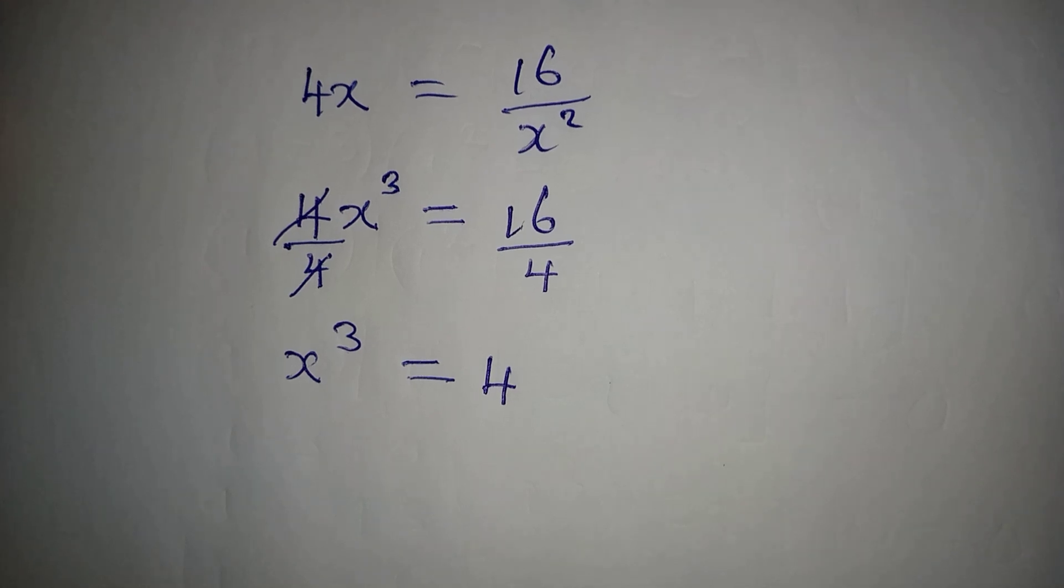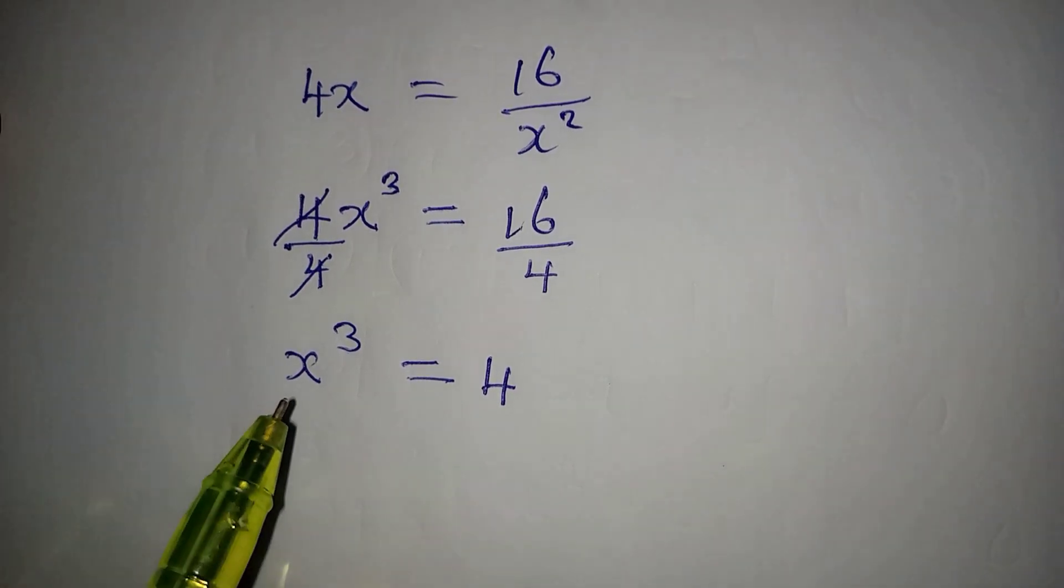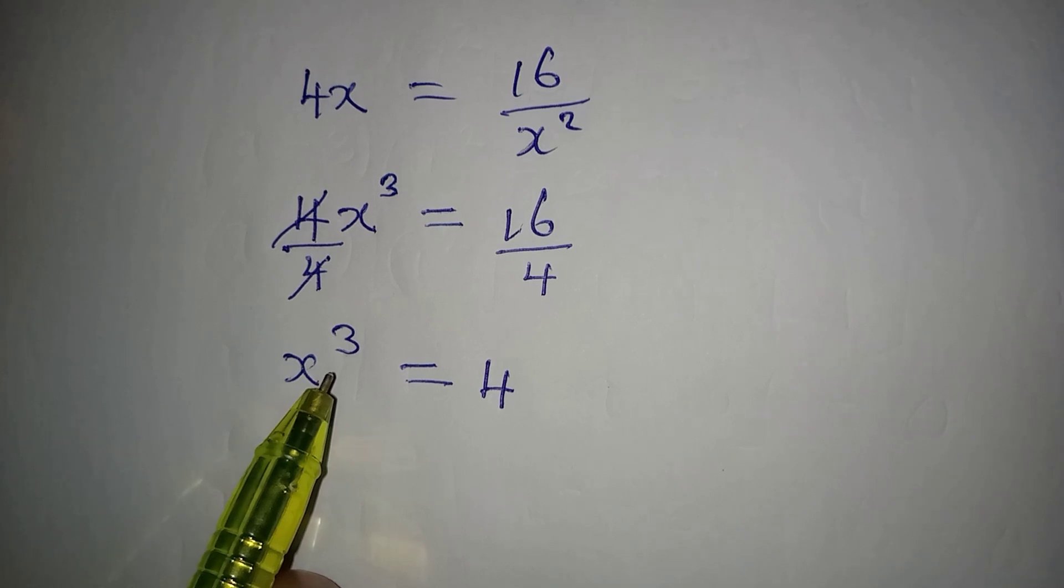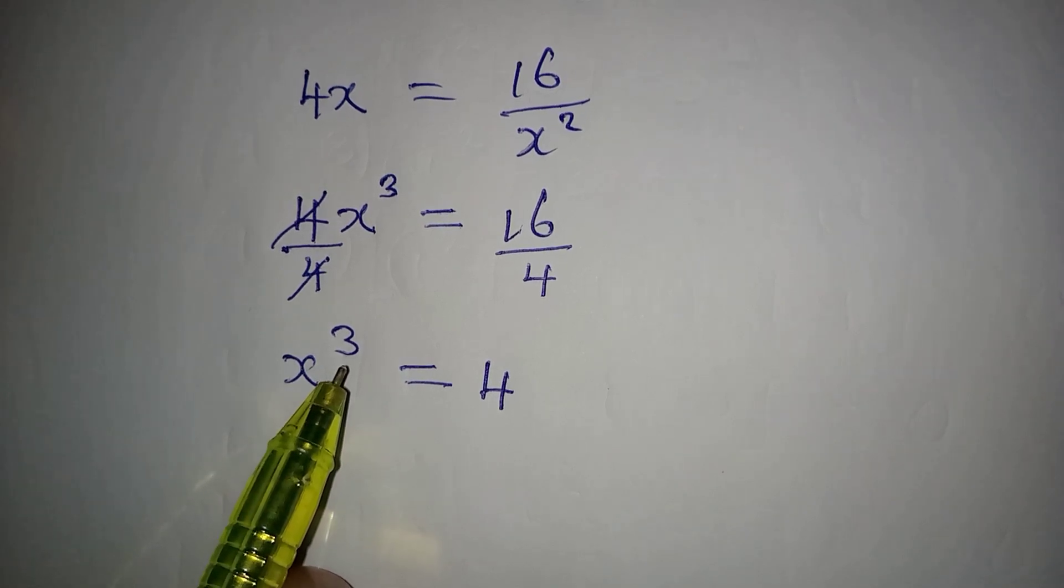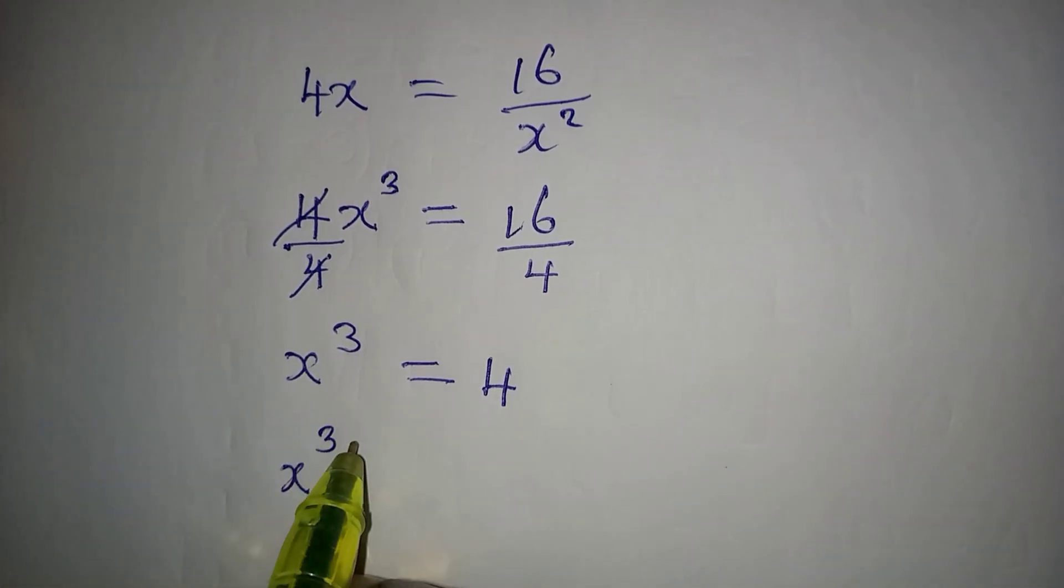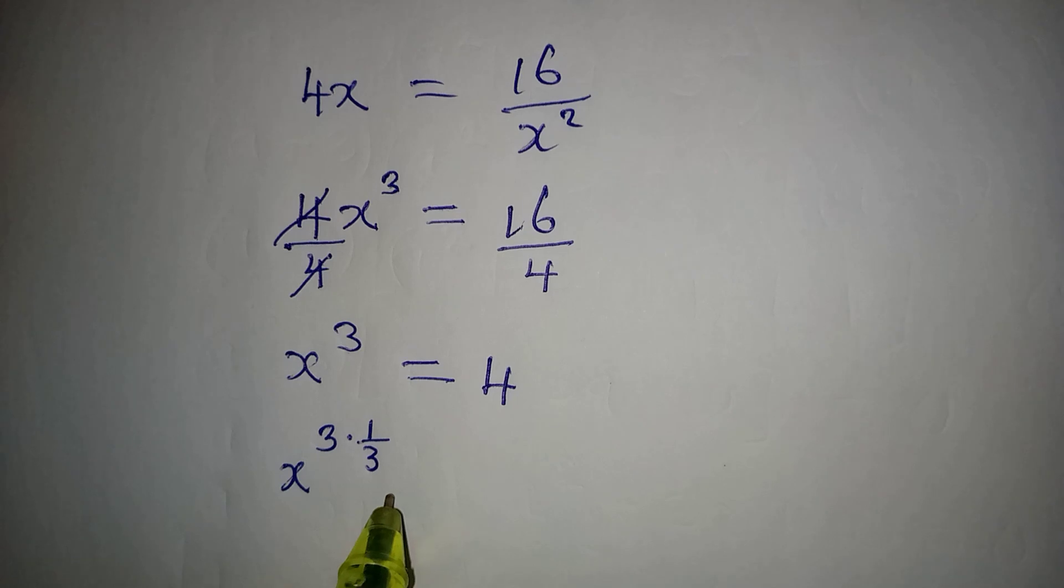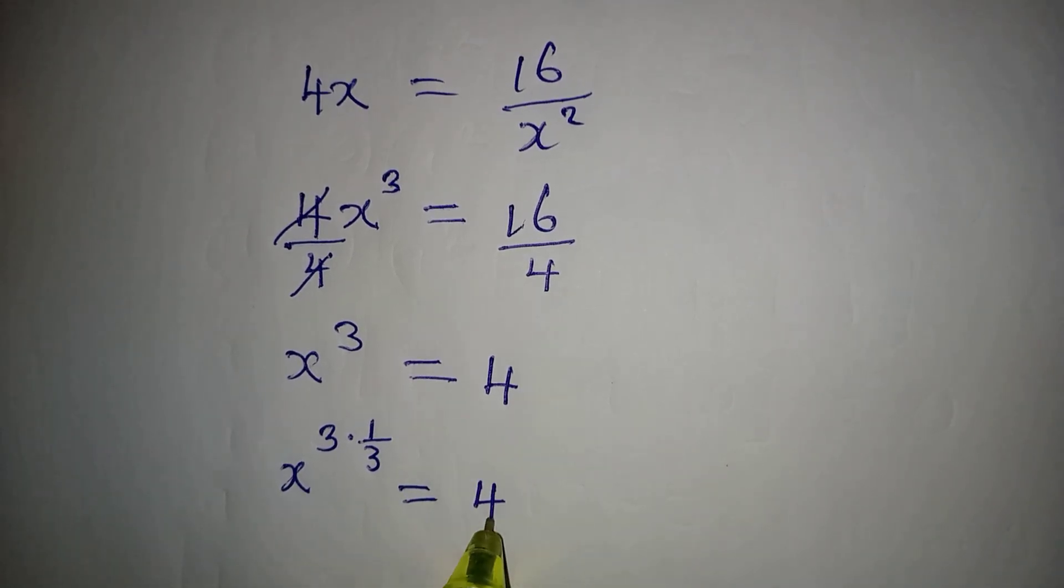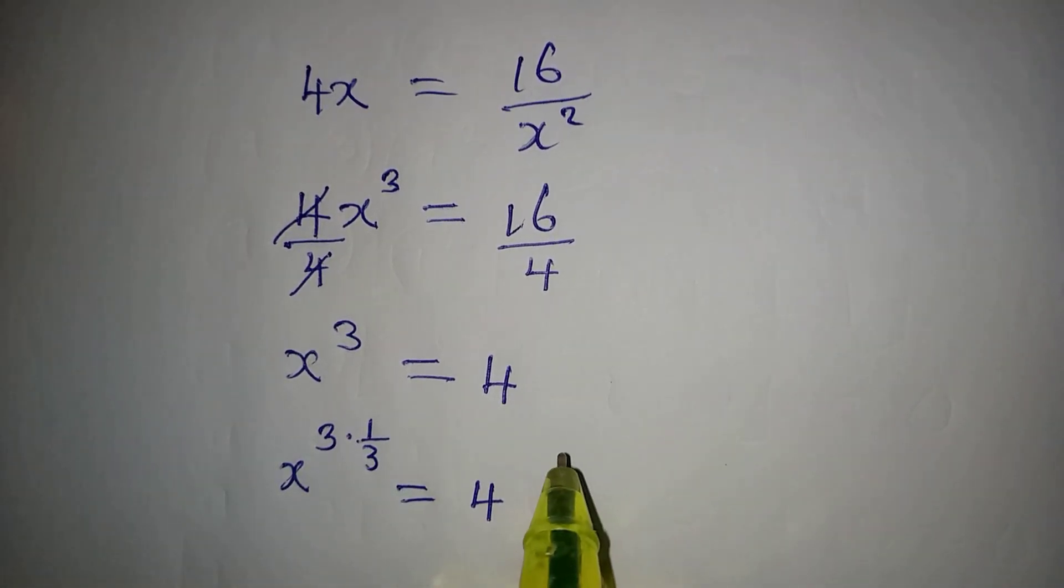And to get the real solution, what do we do? If you have a power like this, you multiply the power by its reciprocal. So we're going to have x to the power of 3 multiplied by 1 over 3, and it will be equal to 4. This reciprocal will reflect here, so we'll be having 4 to the power of 1 over 3.